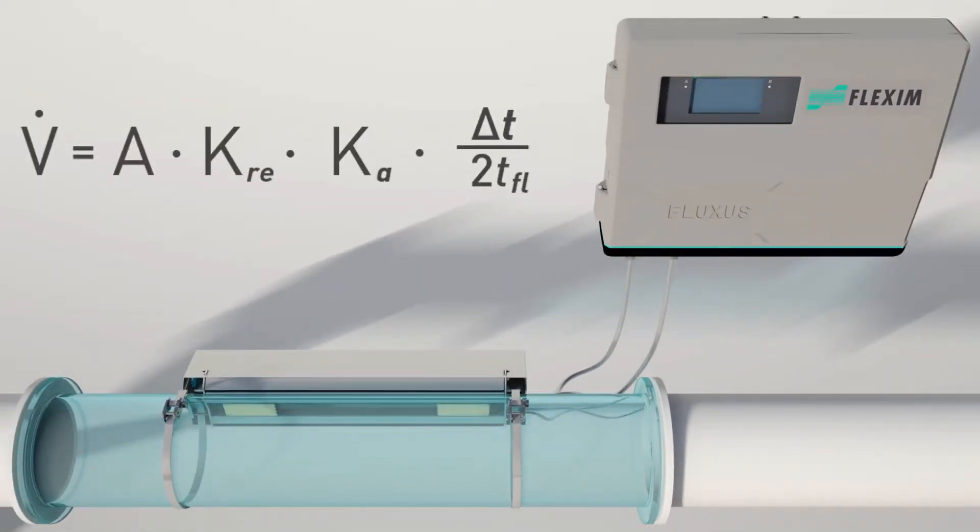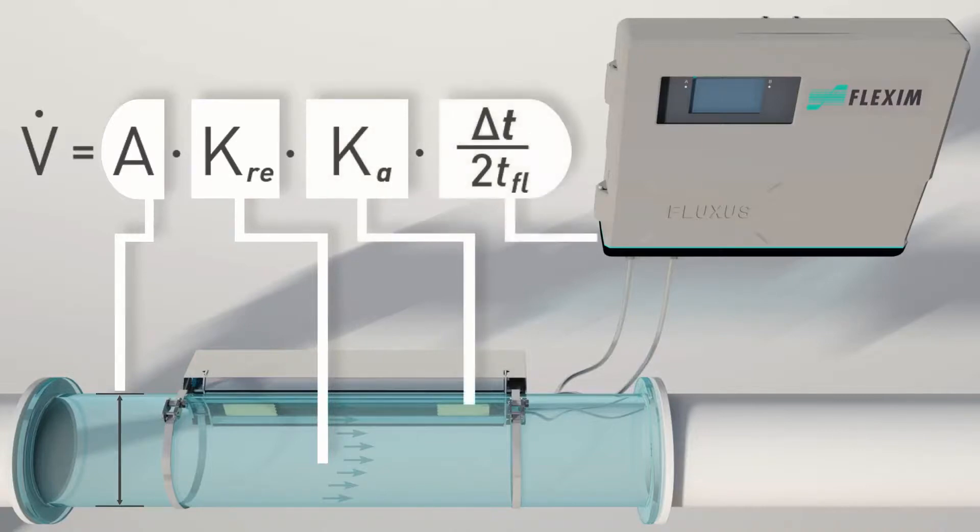The volume flow is calculated using the pipe cross-sectional area, the flow profile factor, the transducer constant, and the measured transit times.